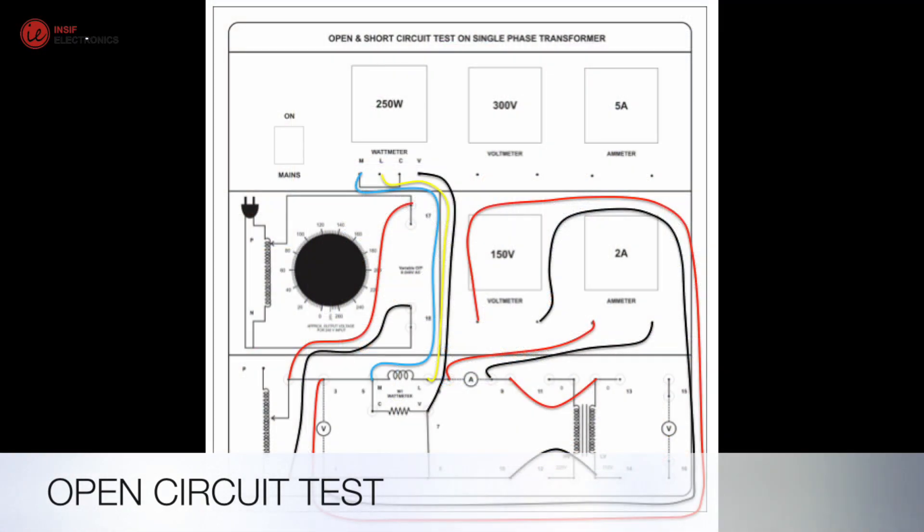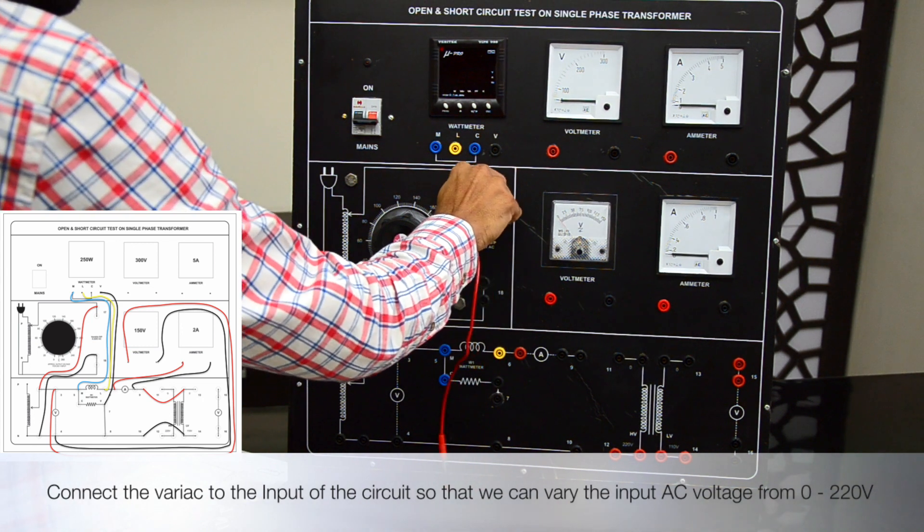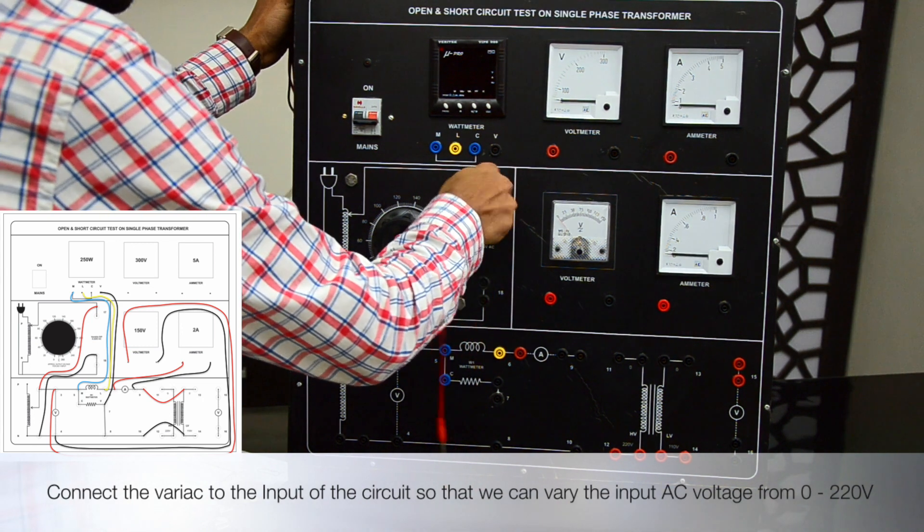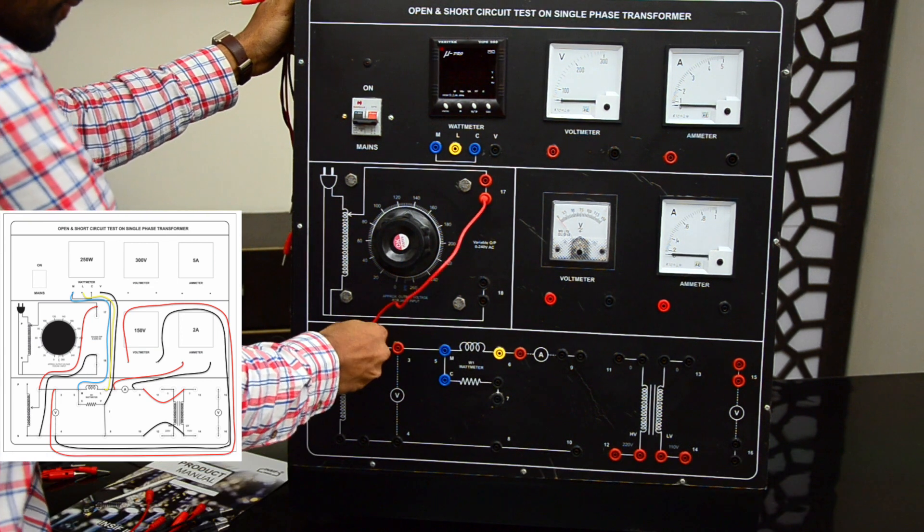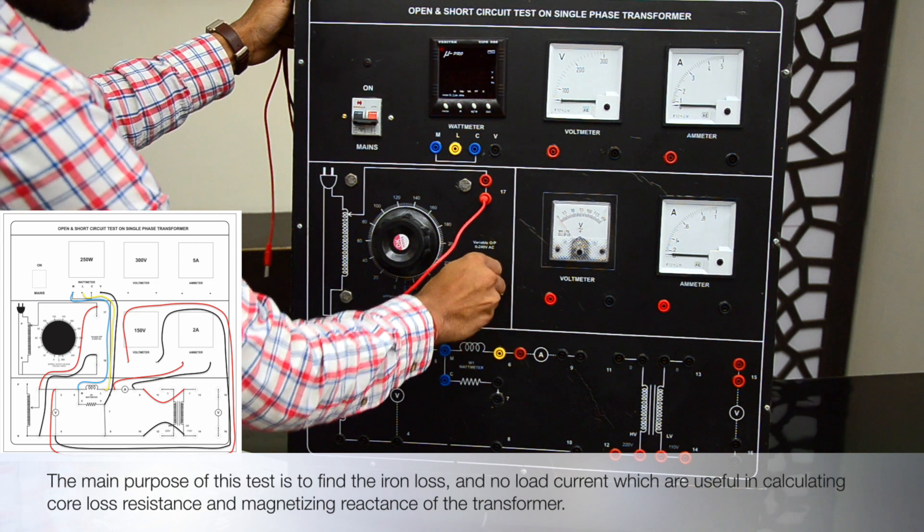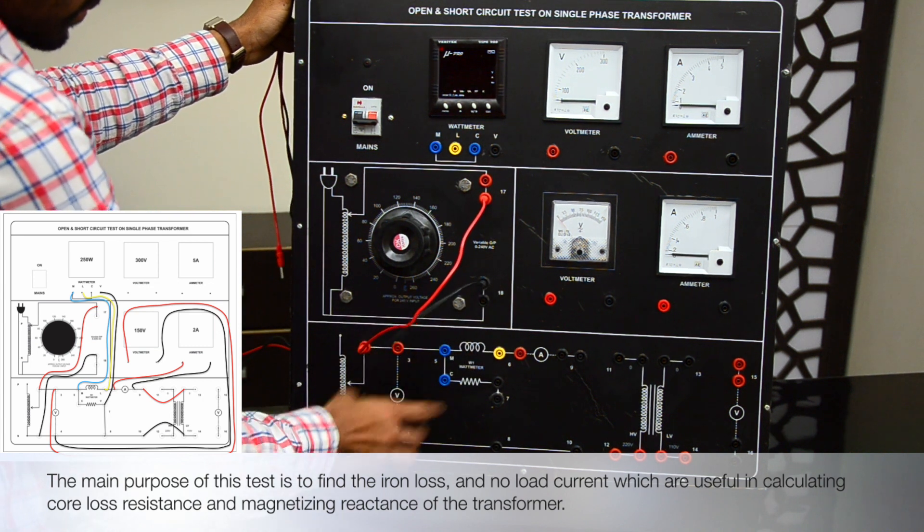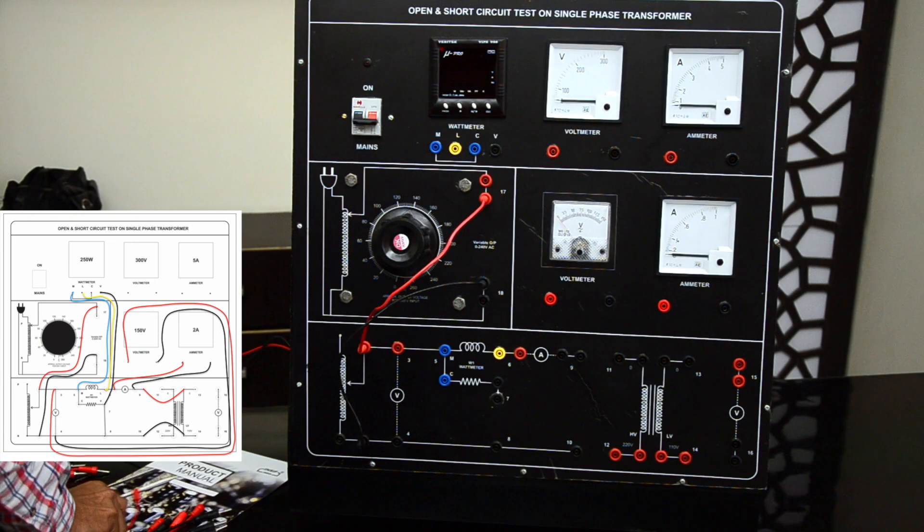Let's begin with the connections of open circuit test. Connect the variac to the input of the circuit so that we can vary the input AC voltage from 0 to 220 V. The main purpose of this test is to find the iron loss and no-load current, which are useful in calculating core loss resistance and magnetizing reactance of the transformer.